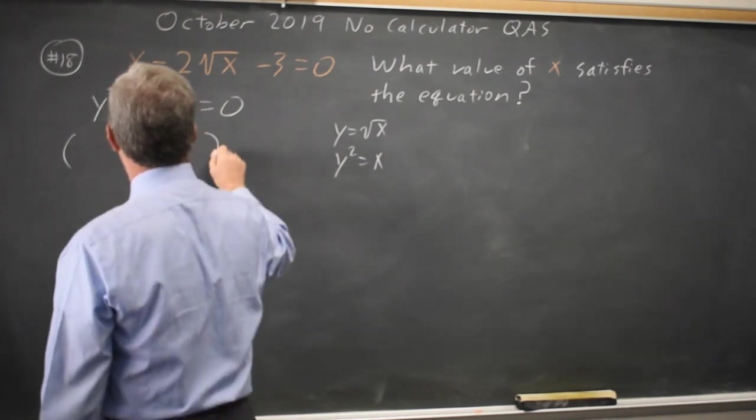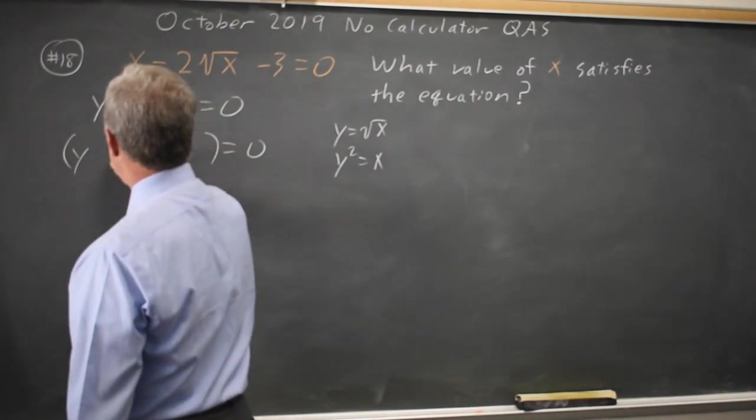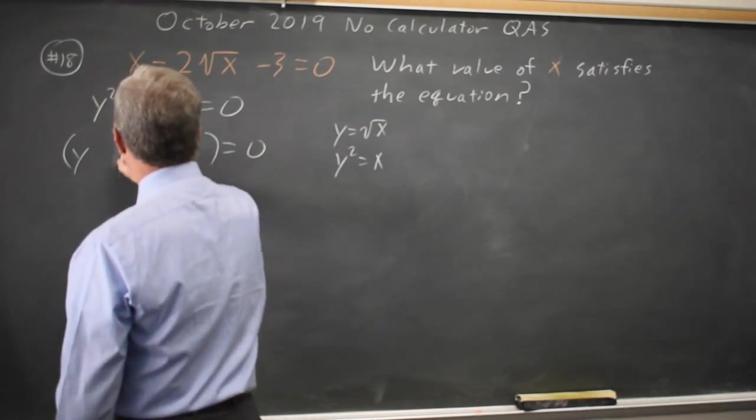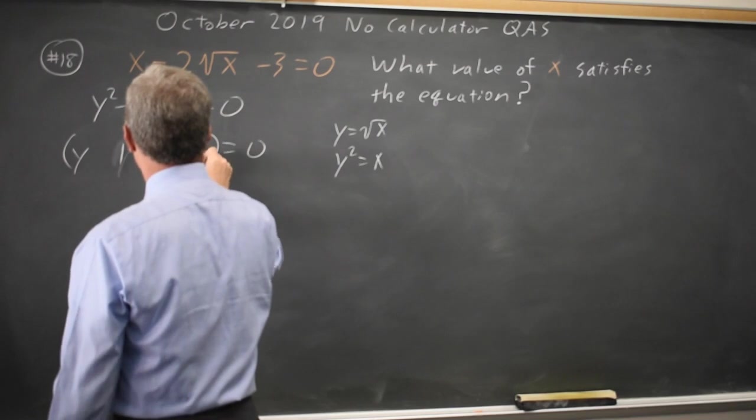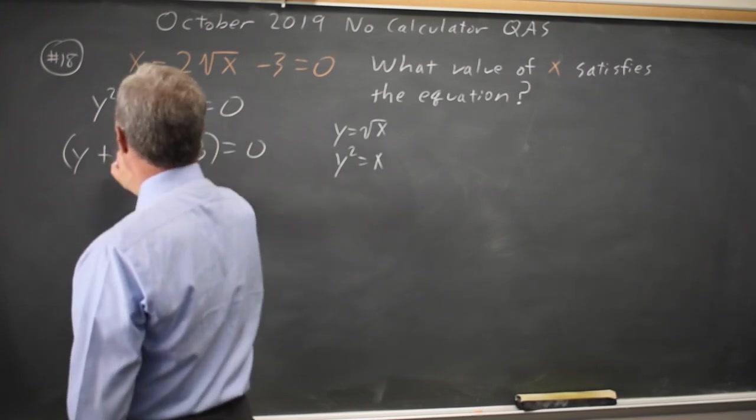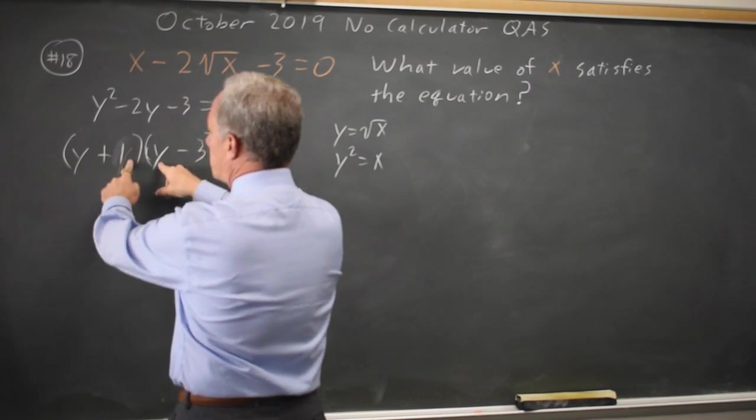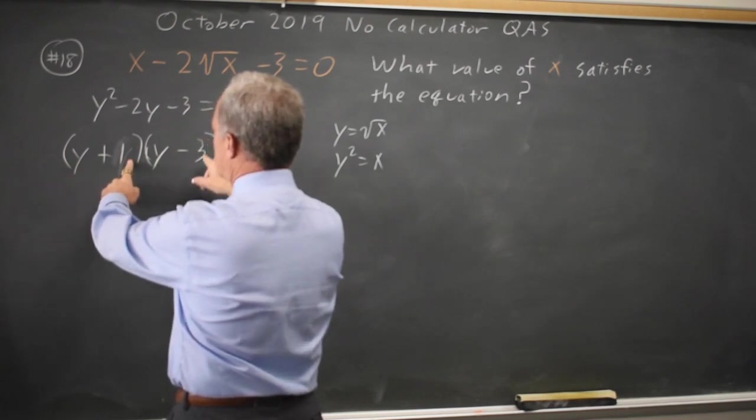I've got y and y, 1 and 3, the 3 will be negative and the 1 is positive. Checking the FOIL, y squared minus 3y plus y is minus 2y minus 3, so that's the correct factorization.